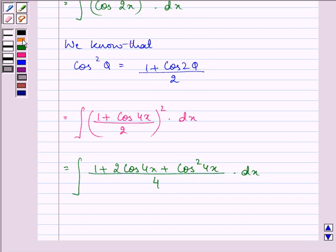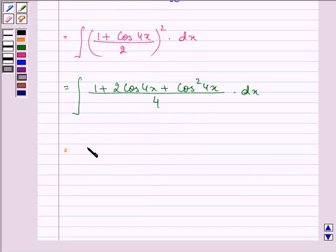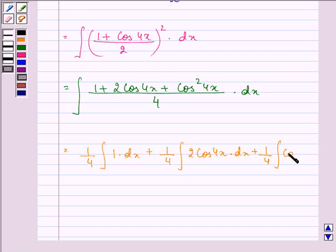Now taking out the constant, we have 1 by 4 into integral of 1 into dx plus 1 by 4 integral of 2 cos 4x into dx plus 1 by 4 integral of cos square 4x into dx.